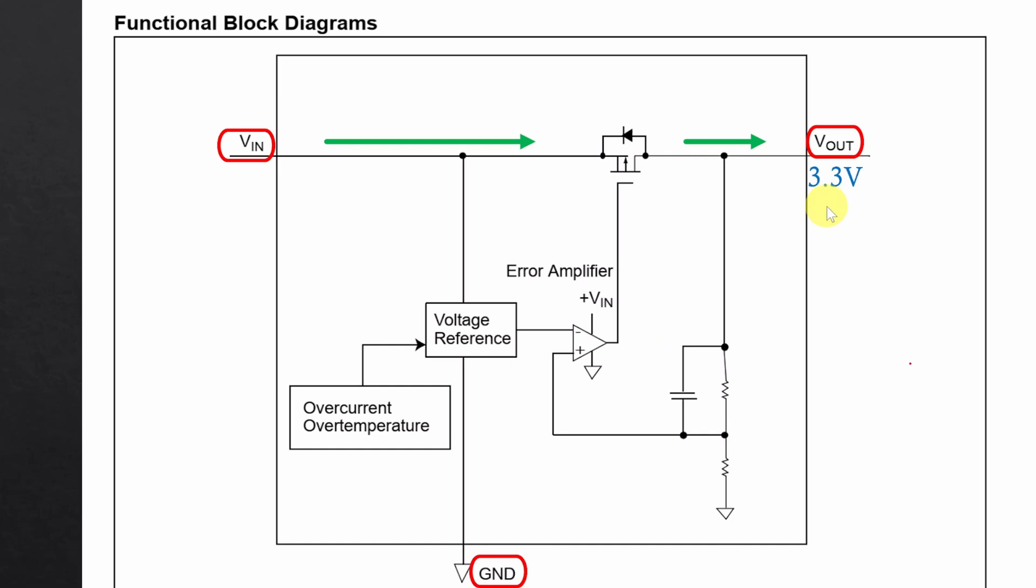So what they did is for the 3.3V regulator they started with the input voltage of 4.3V while drawing 250mA of output current. Then they kept lowering the input voltage until there was a 2% drop in the output voltage. The difference between input and output voltage at this point is the dropout voltage.